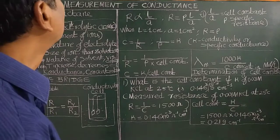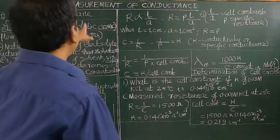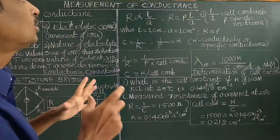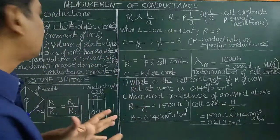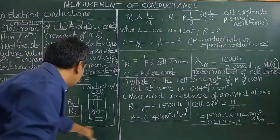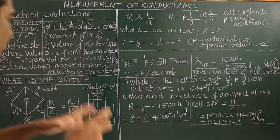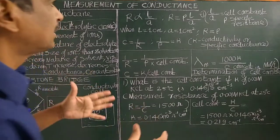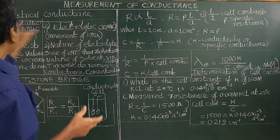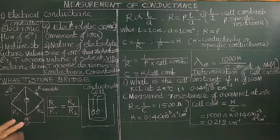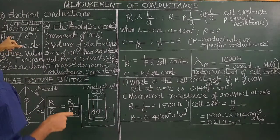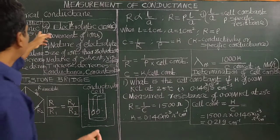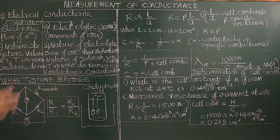Good morning. There are two types of electrical conductance. One is electronic conduction, also called metallic conduction. The other is electrolytic conduction, also called ionic conduction.